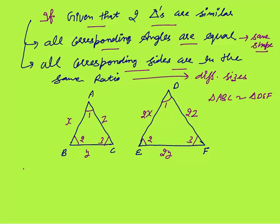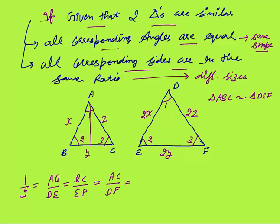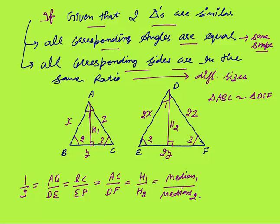Apart from the sides, there are other things which are also in the same ratio as the sides. The sides ratio is 1 to 2. The heights — that is, the perpendiculars — H1 and H2, will also be in the same ratio as the sides. Very important: when two triangles are similar, the ratio of the heights is the same as the ratio of the sides. Apart from height, medians — the medians of triangle 1 and medians of triangle 2 — their lengths are also in the ratio 1 to 2. I will discuss medians further in upcoming lessons.